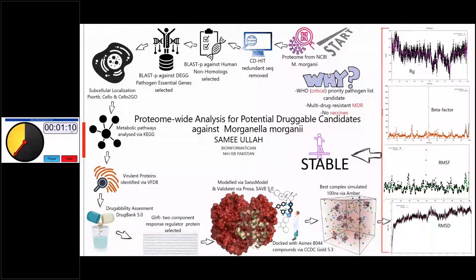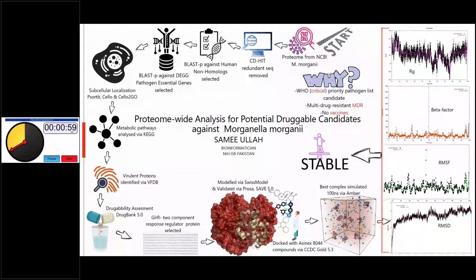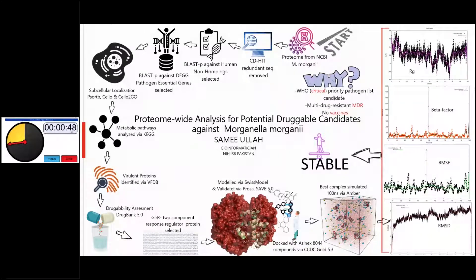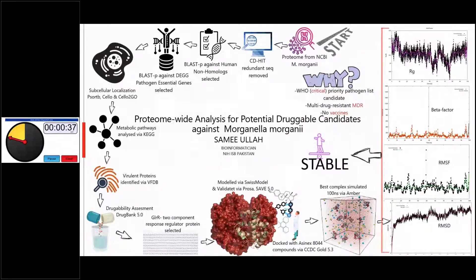The dynamics of the best complex were further explored over 100 nanoseconds of molecular dynamics simulation via AMBER. Results from all simulations — low RMSD, RMSF, Rg, and B-factor — reveal stable conformation of the top hit molecule inside the pocket of GLRR throughout the 100 nanosecond simulation. This study further suggests that the top hit molecule should be validated in vivo and in vitro to find a potential drug against Morganella morganii to tackle antimicrobial drug resistance. Thank you so much for allowing me to present my research at CCDC.